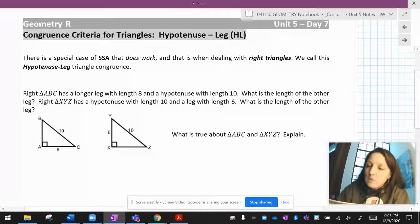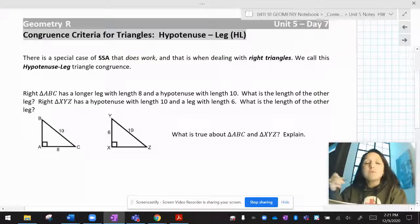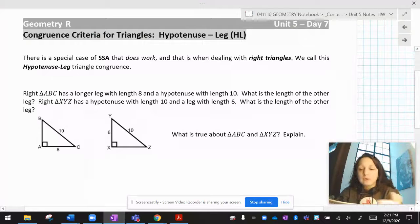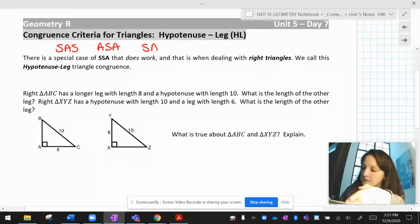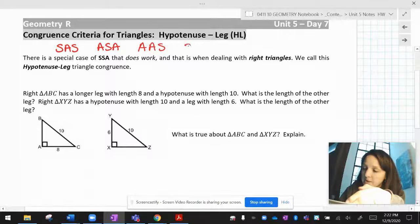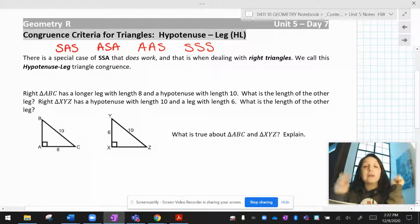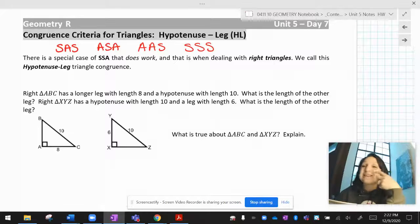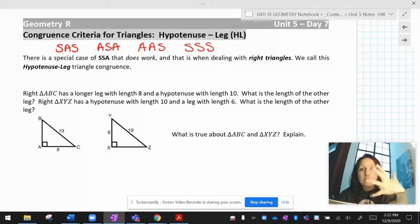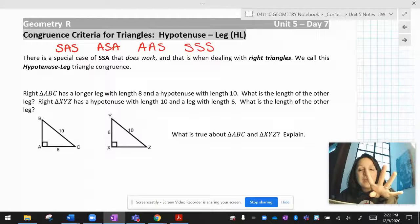Up until this point, we have a bunch of things that allow us to prove two triangles congruent. We have SAS, we have ASA, AAS, and then we have SSS. We have four three-letter theorems. And we said ASS doesn't work, SSA doesn't work, AAA doesn't work. These are the only four ways we have to prove that triangles are congruent.